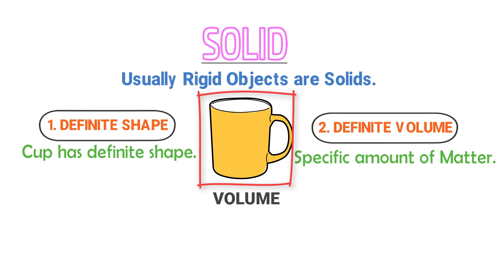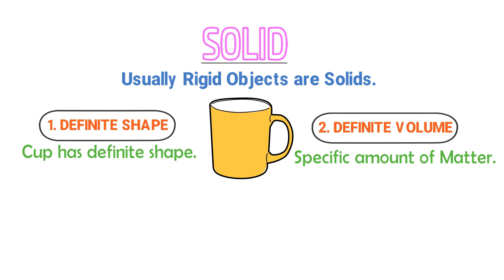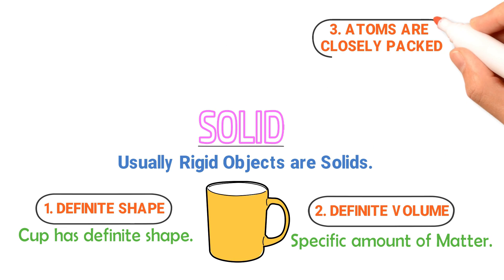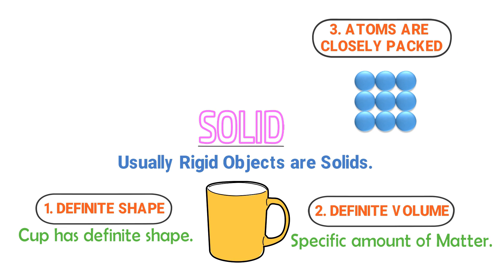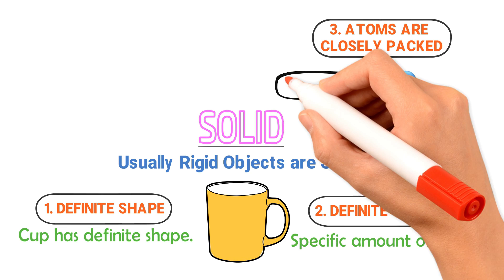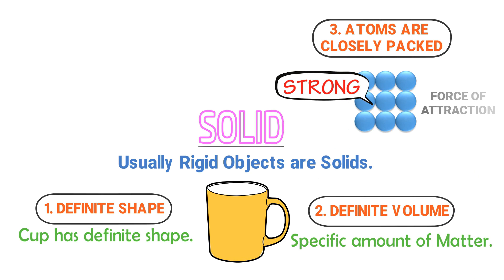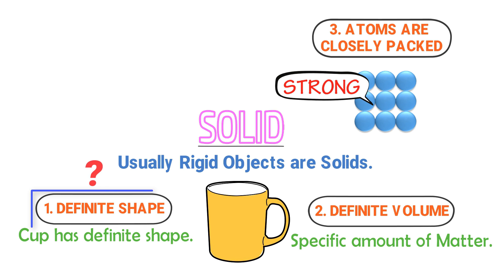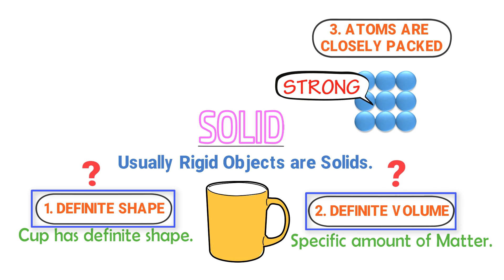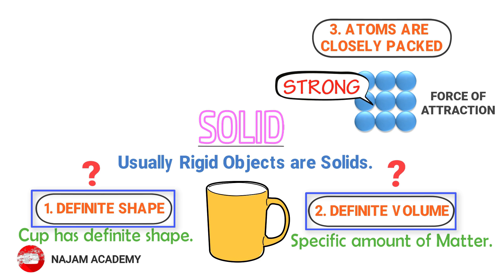Thirdly, the molecules or atoms of solids are closely packed together and uniform, and there is a strong force of attraction between the molecules of solid. If someone asks you why solids have definite shape and definite volume, your answer should be: there is a strong force of attraction between the molecules or atoms of solid. Due to this attractive force, solids get definite shape and definite volume.